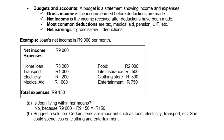Example: Jones' net income is 9,000 rand per month. Her expenses are home loan, transport, electricity, medical aid, food, life insurance, clothing, and entertainment, which all amount to 9,150 rand. Her income is 9,000 and her expenses are 9,150. Is Joan living within her means? The answer is no, because she owes 150 rand.